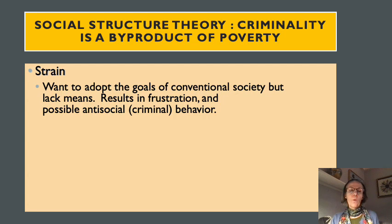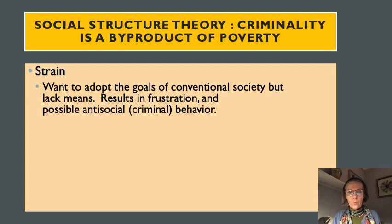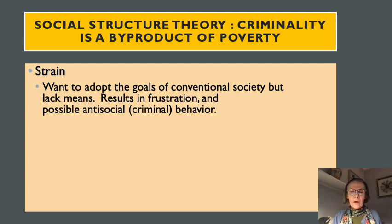The third social structure theory is strain theory. It says that when people want to adopt the goals of conventional society but lack the means to do so, the resulting frustration can play itself out in anti-social and criminal behavior. You may very much want a good education, a family, a stable job — but poor circumstances make those goals extremely difficult to achieve.